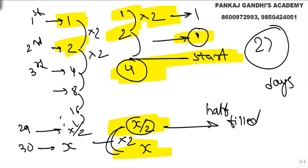So out of 30 days, three days are saved. What we need is 27 days. One to two and two to four — two days saved — and x by two to x because we needed only half filled, so one more day saved: three days total. The answer is 27 days.